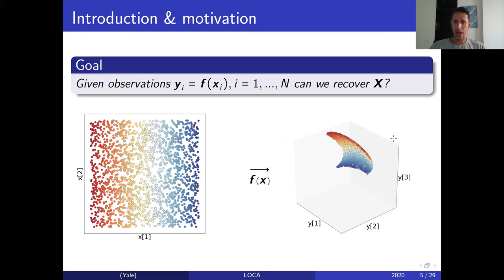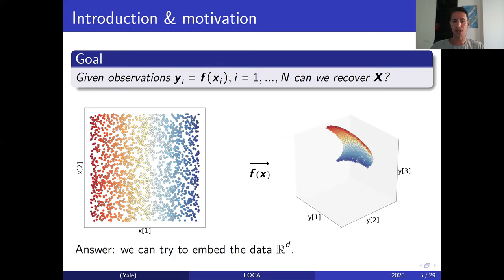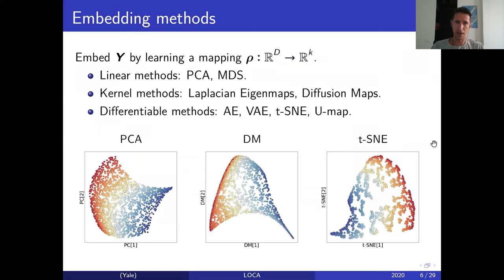In general the answer is no, we can't do this. Perhaps we can do it with some prior knowledge on x, or some prior knowledge on f. One simple example: if f is linear, we can try to embed the data in the lower dimension d and attempt to recover the original latent domain x. There are several methods for embedding data from higher to lower dimensions — linear methods like PCA and MDS, kernel methods like Laplacian eigenmaps and diffusion maps, or differentiable methods like autoencoders, variational autoencoders, t-SNE, and UMAP.